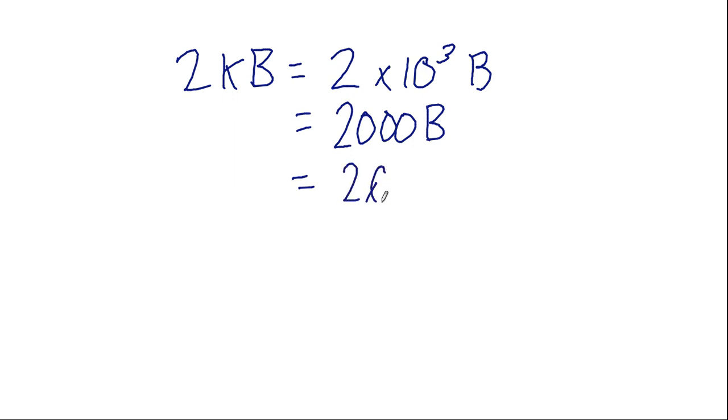As another example, if we have 2 KB using our standard notation, that is 2 times 10 to the power of 3 bytes, which is 2,000 bytes, which is 2,000 multiplied by 8 bits, because we have 8 bits in 1 byte, so 16,000 bits. 2 kilobytes is equal to 16,000 bits.